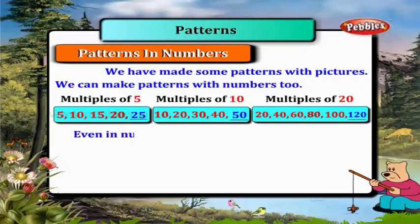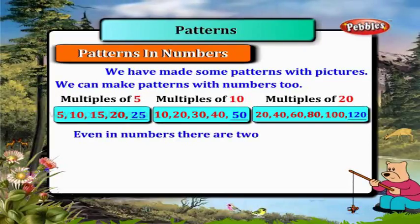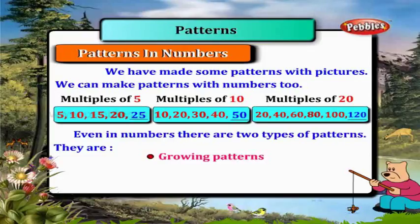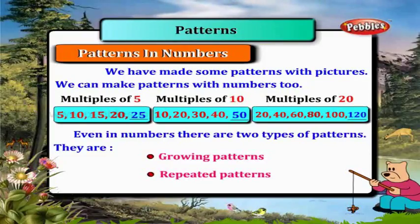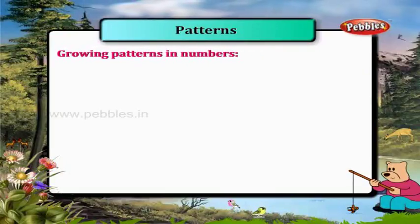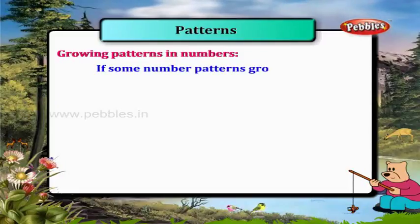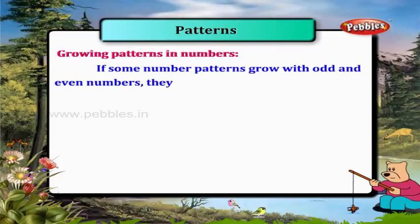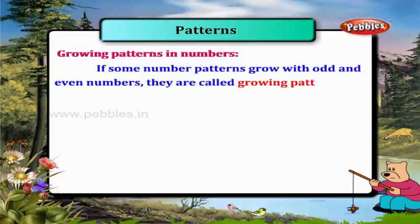Even in numbers, there are two types of patterns: growing patterns and repeated patterns. Now, growing patterns in numbers — if some number patterns grow with odd and even numbers, they are called growing patterns.